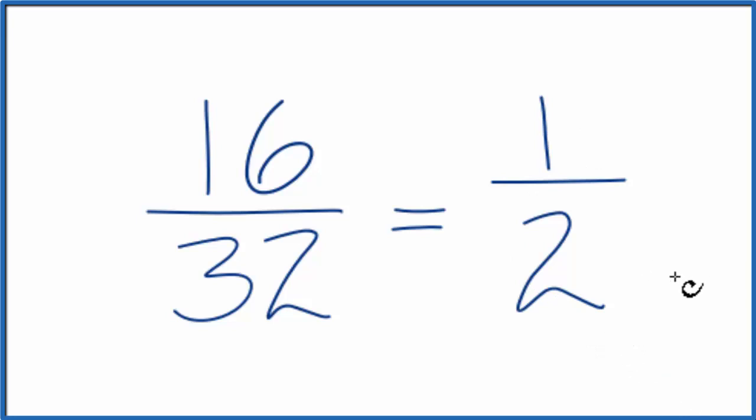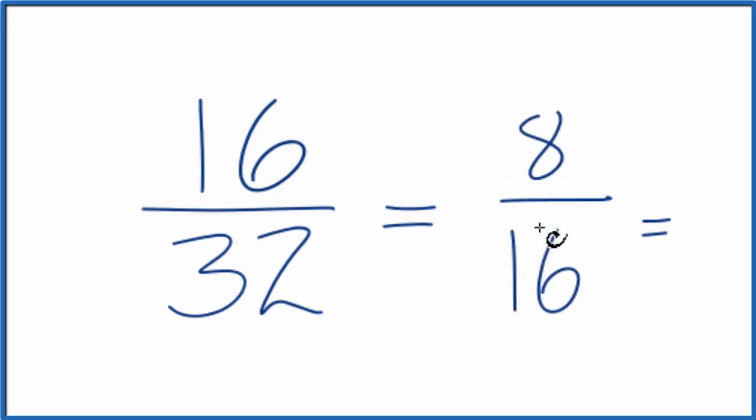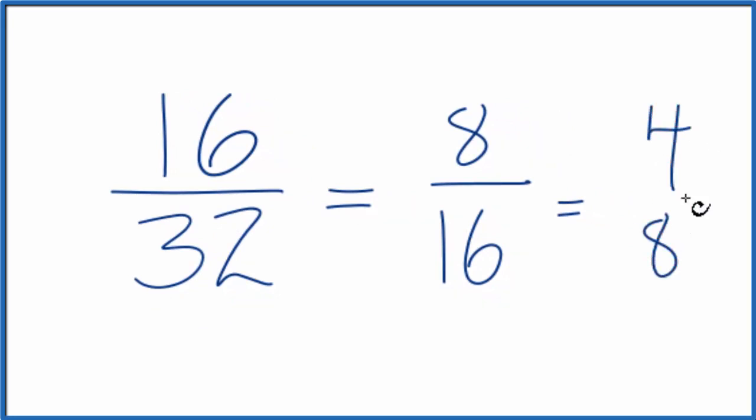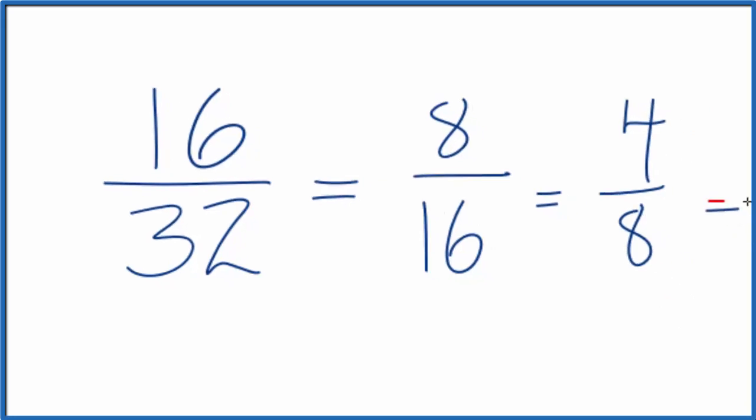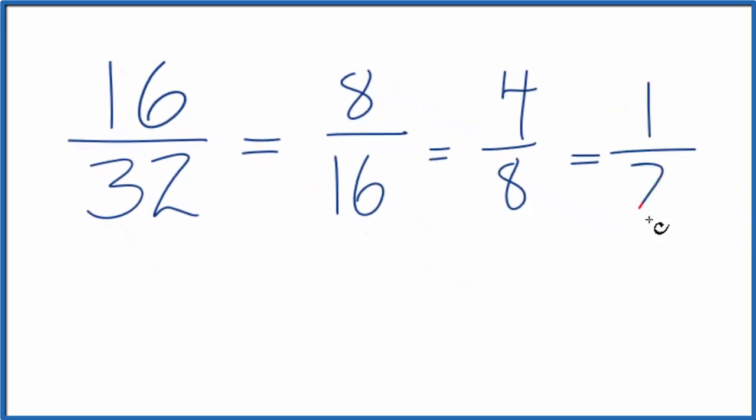There is one other way we could do this. We could just divide 16 and 32 by 2 and get 8 over 16. We could divide that by 2 again and get 4 over 8, and then divide this by, let's just divide both of them by 4 to get 1 over 2.